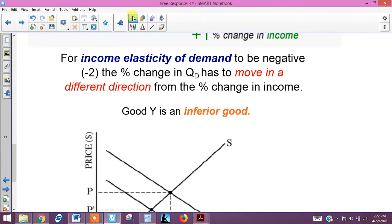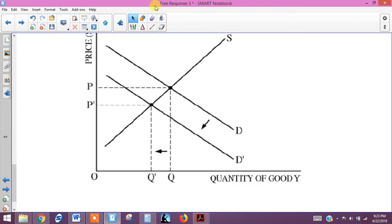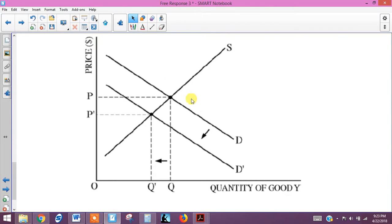And the graph you want to draw should simply be a supply and demand graph for good Y, showing the demand curve shifting to the left so that you have a lower quantity demanded and supplied as a result of the rise in income. So you have a shift in the demand curve to the left and a decrease in price and quantity.